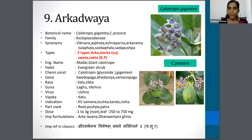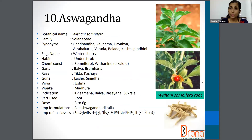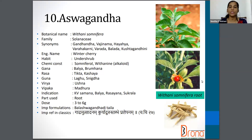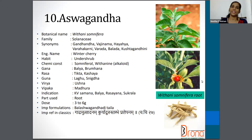The next one is Ashwagandha, quite popular these days. The botanical name is Withania somnifera and it belongs to the Solanaceae family. Synonyms are Vajidama, Balada, Kushtagandhini, etc. The English name is Winter Cherry. The part used is root, and the dosage is 3 to 6 gram.